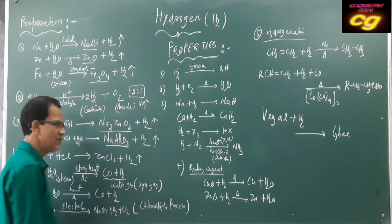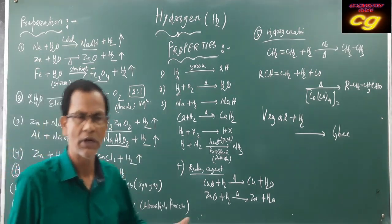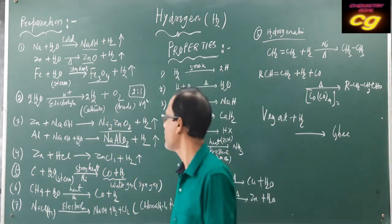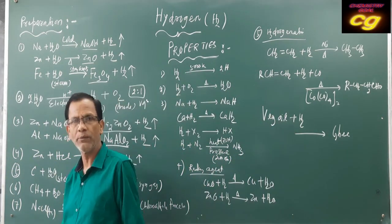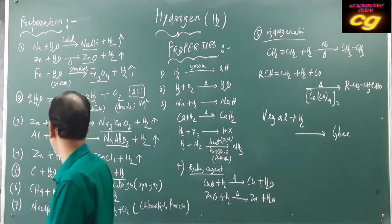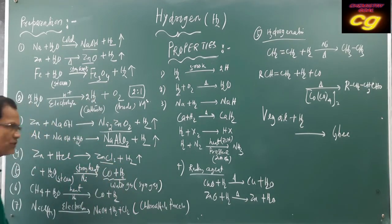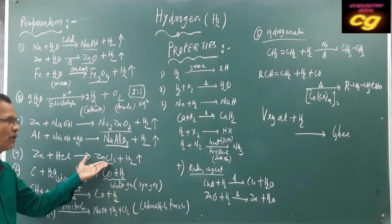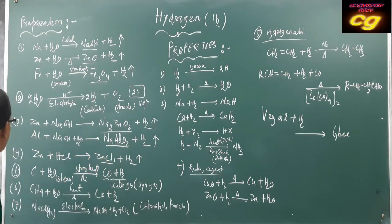Metals like zinc and magnesium react with hydrochloric acid or sulfuric acid. This is also a laboratory method of preparation. Zinc reacts with hydrochloric acid forming zinc chloride and hydrogen; zinc reacts with sulfuric acid forming zinc sulfate and hydrogen.